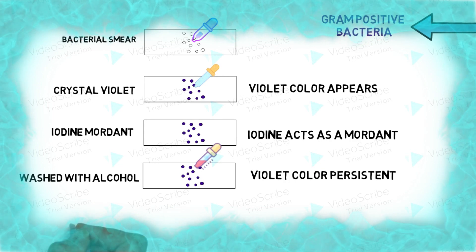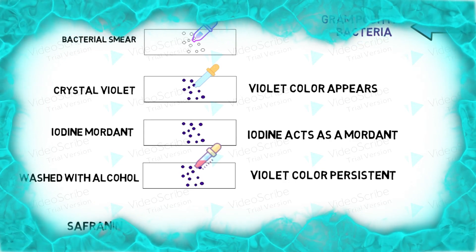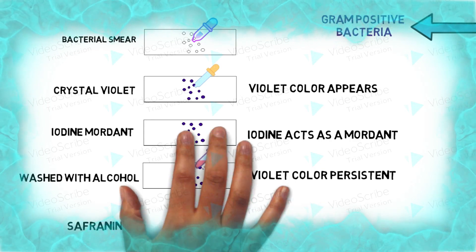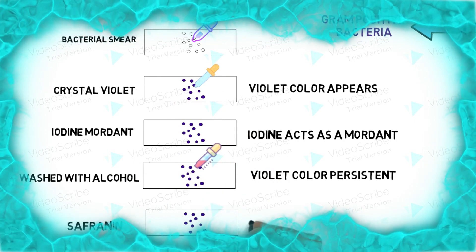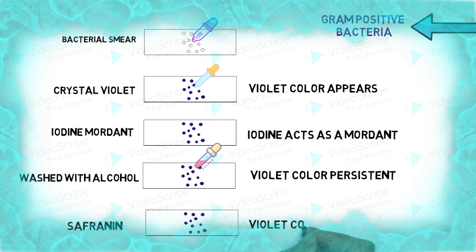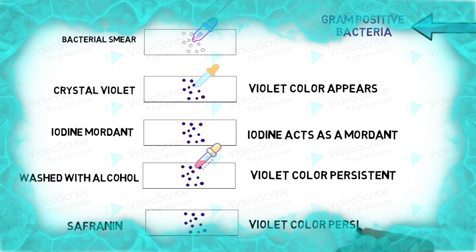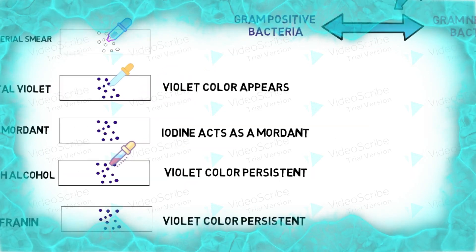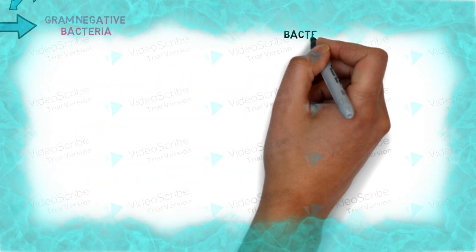After that, we add safranin to the bacterial smear. Even then, the violet color remains persistent. This indicates positive results for Gram-positive bacteria.